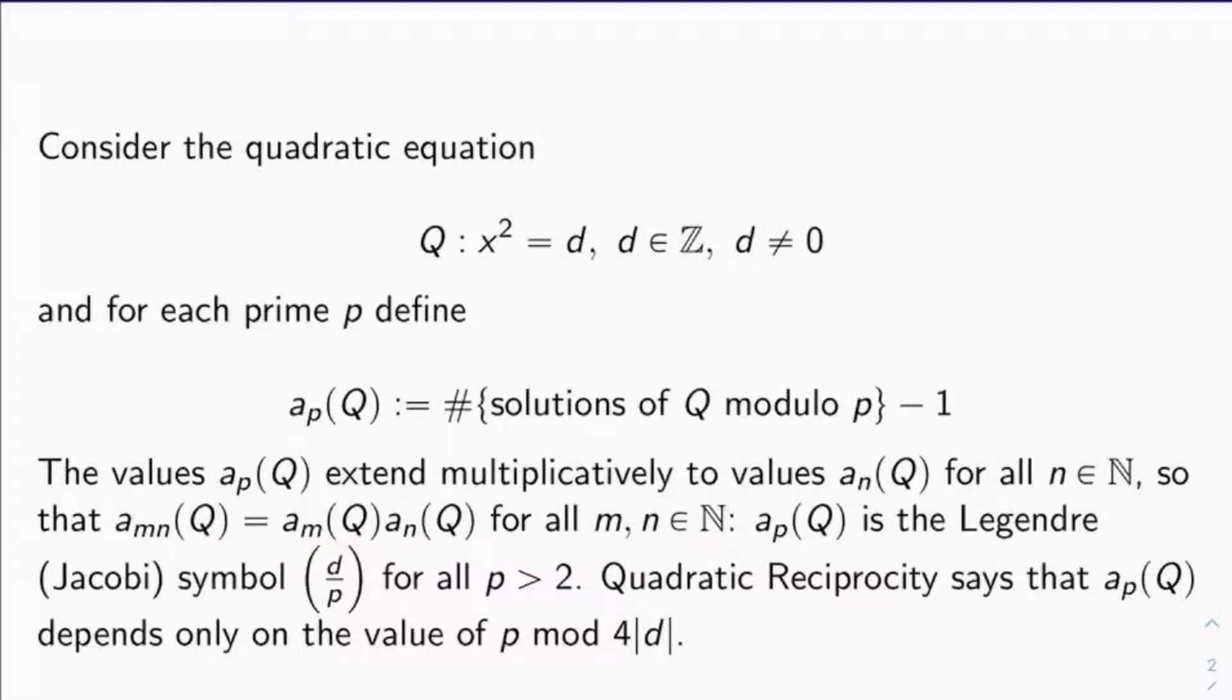The reason for that is a_p(Q) is actually the Legendre symbol, if you hadn't recognized it. It's just the Legendre symbol d over p, at least for primes p bigger than two. And you can always extend this multiplicatively in the denominator to the Jacobi symbol. So if you know your elementary number theory, I'm not saying anything new to you here. You know all of this already.